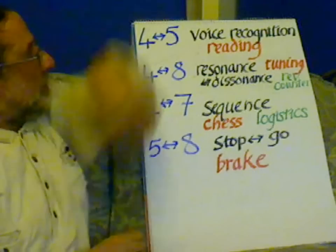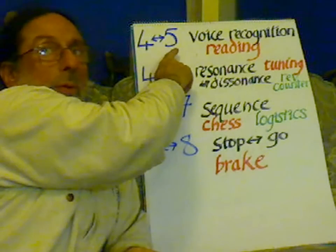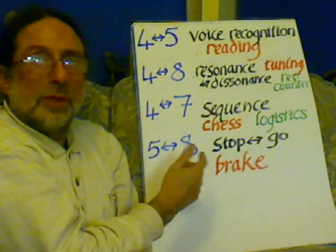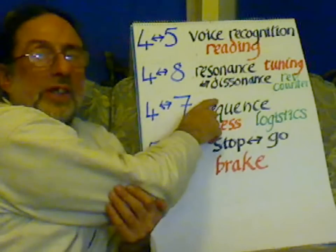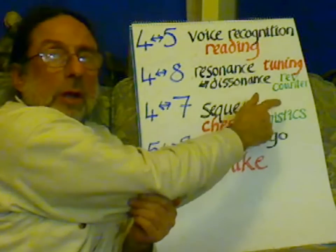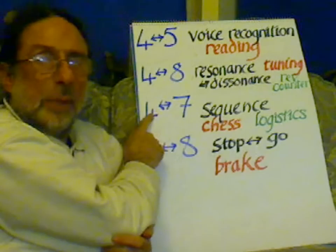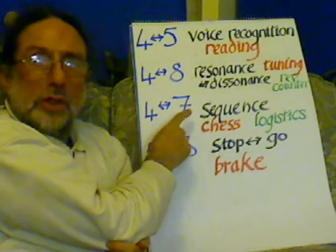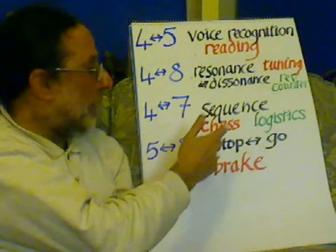From 4 to 5 is voice recognition — from voice to eye — which is the ego and the driver. It's recognition of the voice, but equally recognition of different sounds and signals. From 4 to 8 is resonance and dissonance: just as you get the intensity of the music, you get the resonance or dissonance in the tuning, which in the car would be the rev counter. From 4 to 7 is the sequence — the timing of objects — which we call logistics, like a chess computer able to deal with various problems moving objects around.